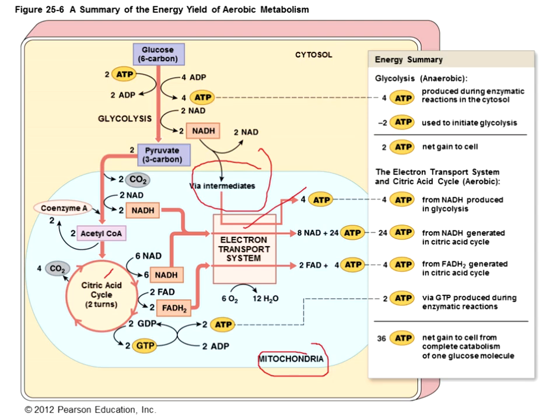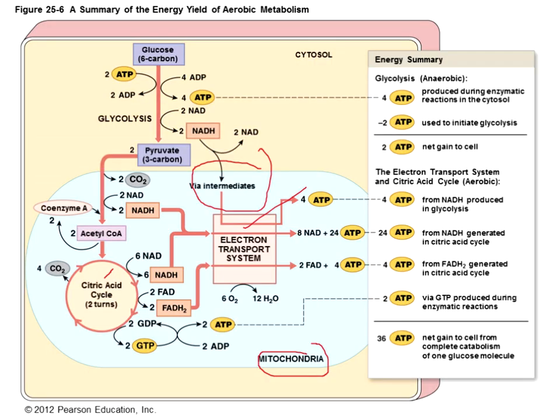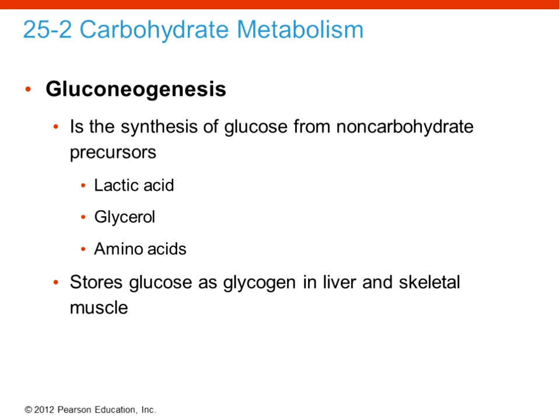You don't need to know all the exact steps like coenzyme A and acetyl-CoA. But you should have a general understanding of what we're getting from mitochondrial production, how the citric acid cycle and electron transport chain work, and that the net gain is 36 ATP from catabolism of one glucose molecule.